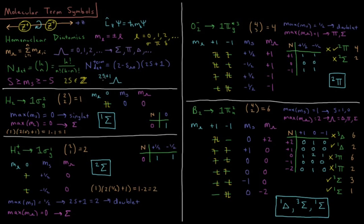So our diatomic term symbol is going to look like 2S+1 lambda, whereas our atomic term symbols look like 2S+1 L sub j. This is going to be a pretty similar procedure to what we did for atomic term symbols, with one little caveat that I'll discuss as we do some examples.